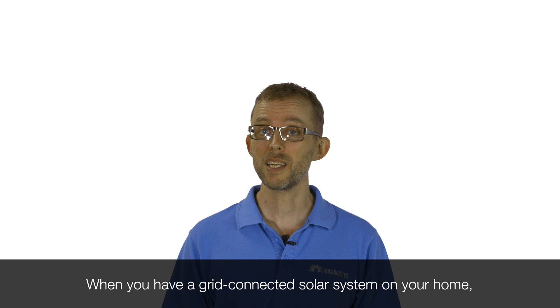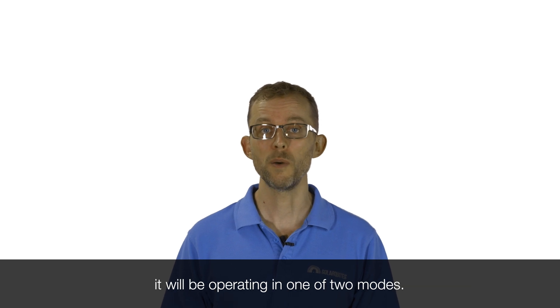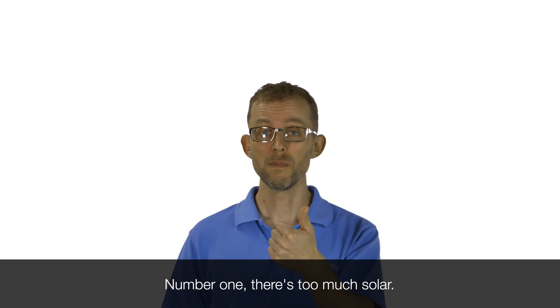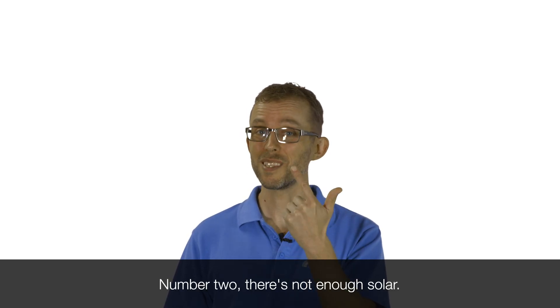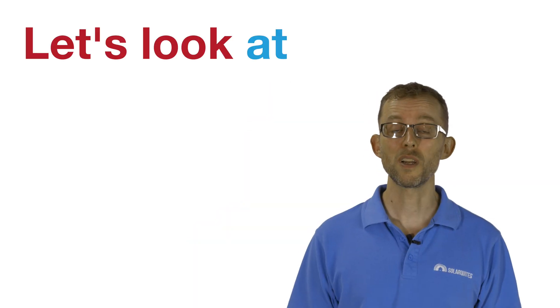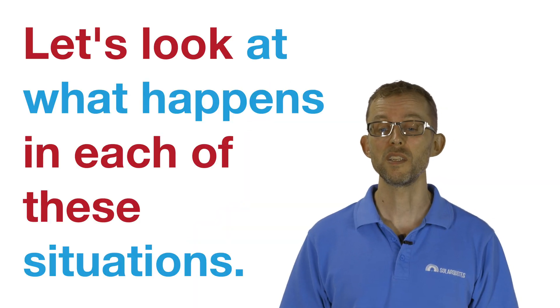When you have a grid connected solar system on your home, it will be operating in one of two modes. Number one, there's too much solar. Number two, there's not enough solar. Let's look at what happens in each of these situations.